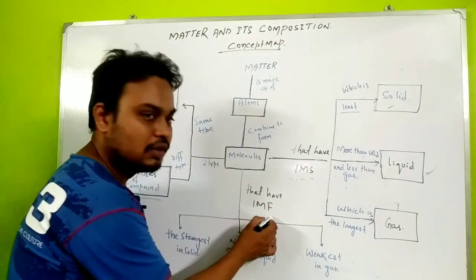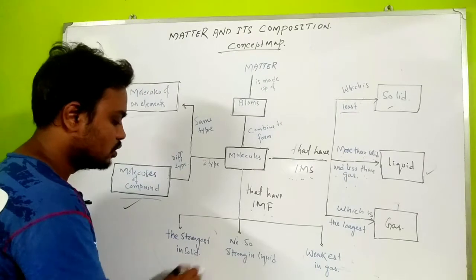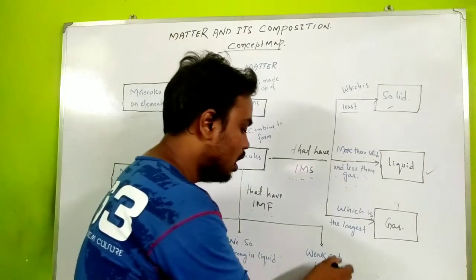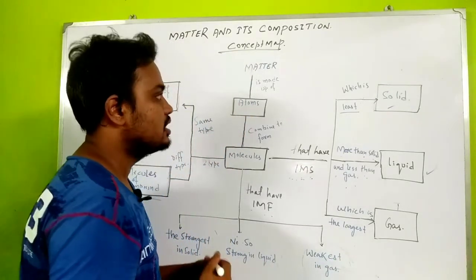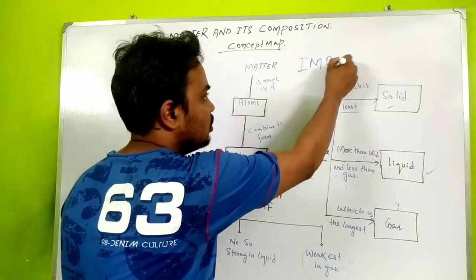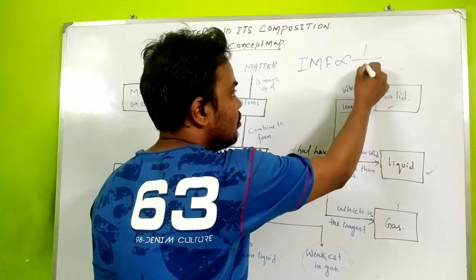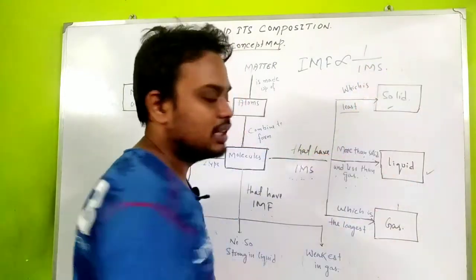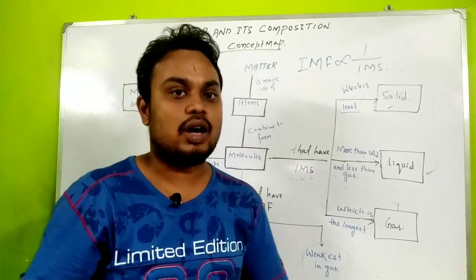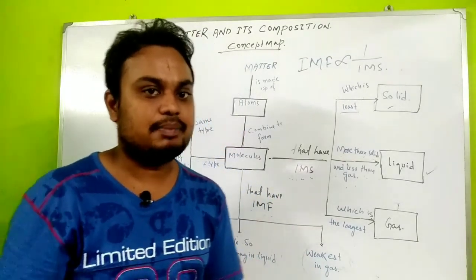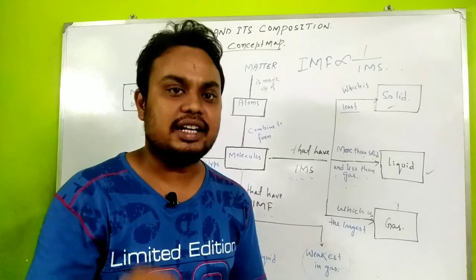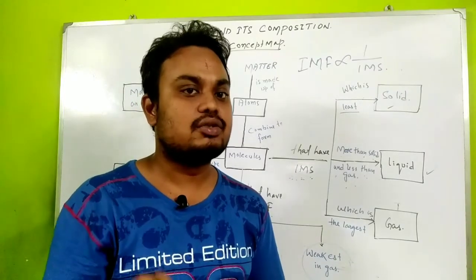Now let's look at intermolecular force of attraction: it is strongest in solid, medium in liquid, and weakest in gas. The important concept is that intermolecular force of attraction is inversely proportional to intermolecular space — when force is more, space is less, and when force is less, space is more. I hope the concept of the first chapter is clear. If you have any doubts, write in the comment section and I will try to answer them.